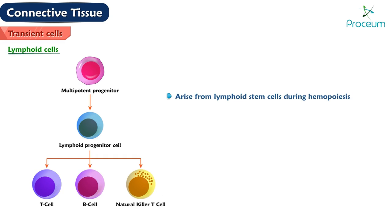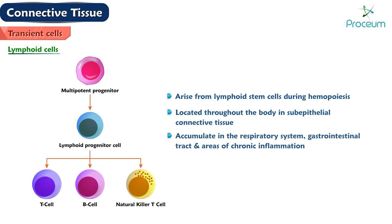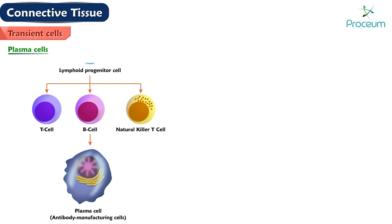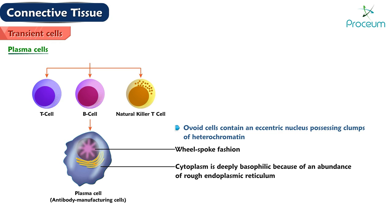Lymphoid cells arise from lymphoid stem cells during hemopoiesis. They are located throughout the body in the sub-epithelial connective tissue and accumulate in the respiratory system, gastrointestinal tract, and elsewhere in areas of chronic inflammation. Plasma cells are antibody manufacturing cells that arise from activated B lymphocytes. These ovoid cells contain an eccentric nucleus possessing clumps of heterochromatin arranged in a wheel-spoke fashion. Their cytoplasm is deeply basophilic due to an abundance of rough endoplasmic reticulum. They are most abundant at wound entry sites or in areas of chronic inflammation.